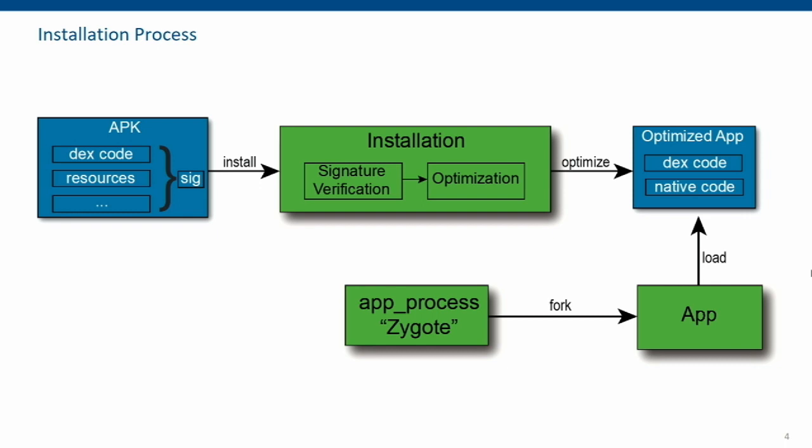Looking at the installation process, we can see how both frameworks relate to each other. Everything on Android starts with an APK. We have the DEX bytecode, we have a signature on that, and the signature is verified. After signature verification, the optimization kicks in and creates an optimized version of the app — keep that in mind for later. At runtime, the zygote process is forked for the app, and the app loads this optimized version.